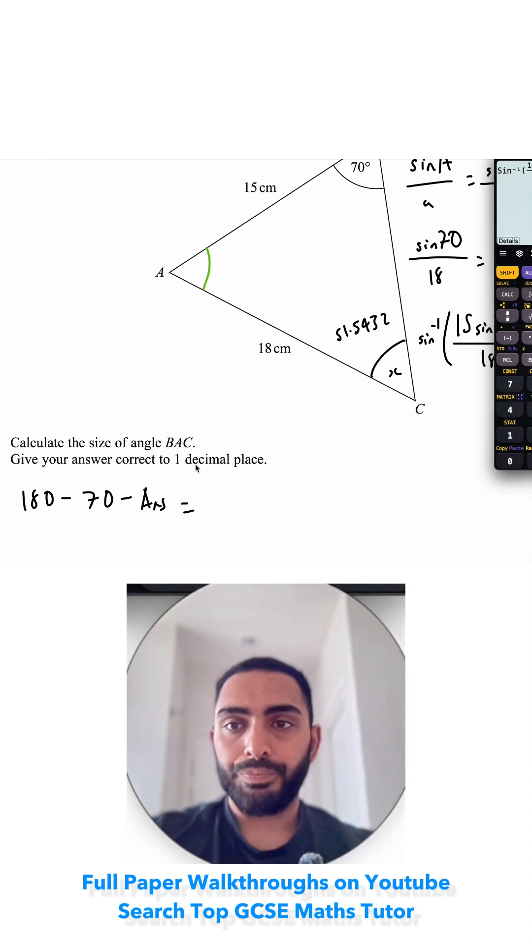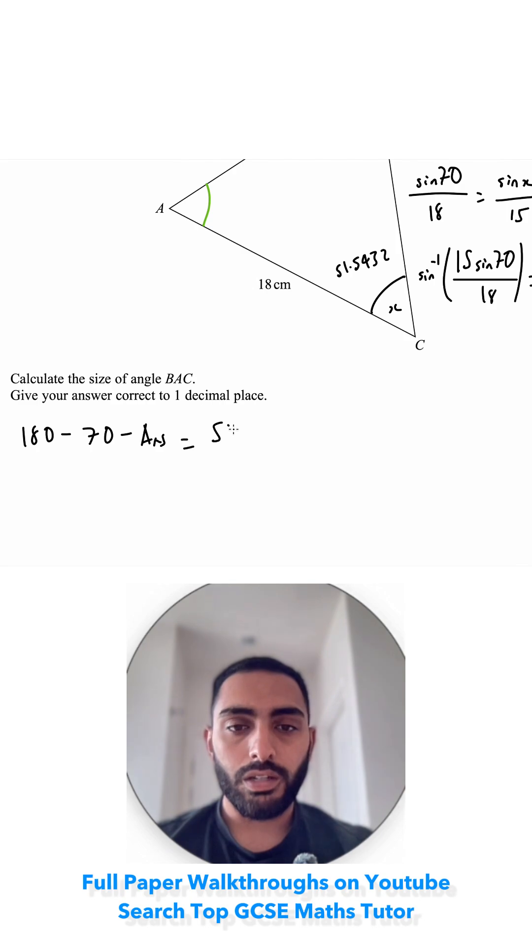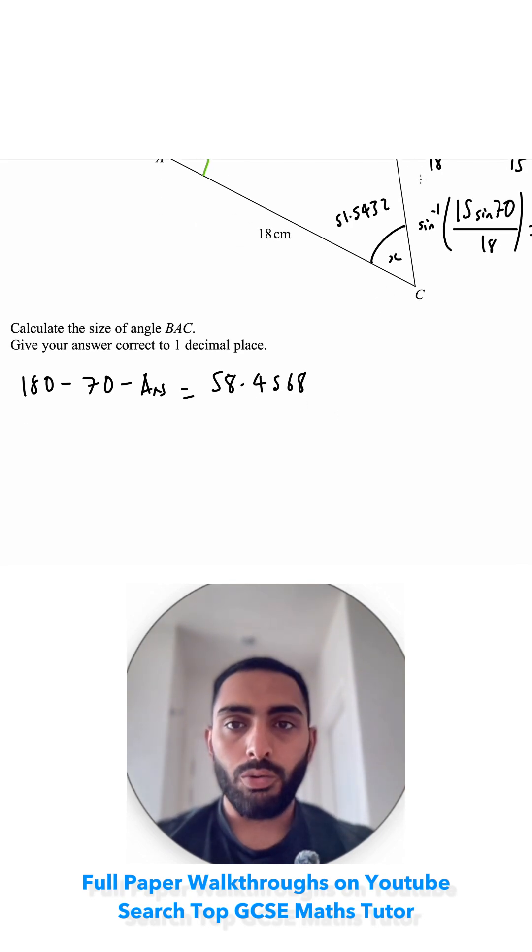So 180 minus 70 minus my previous answer, which is 58.4568. I want to round it to one decimal place, so I'm going to look after my decimal point. This five is my decider and that's telling me I need to round up to 58.5. It's an angle, so it's going to be in degrees and that's to one decimal place.